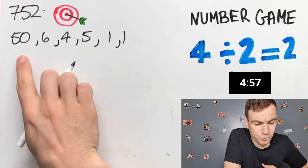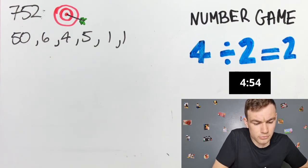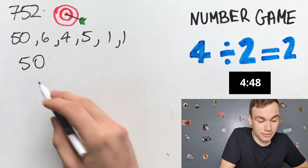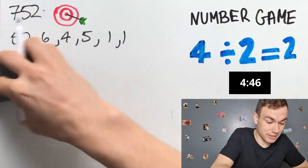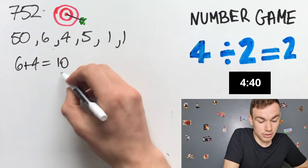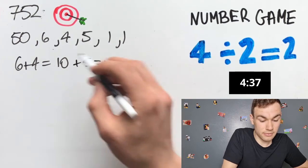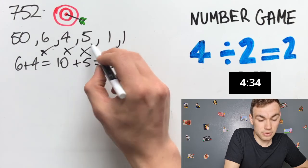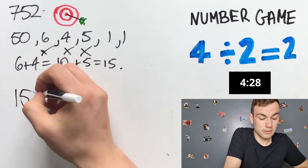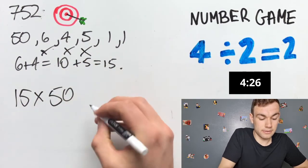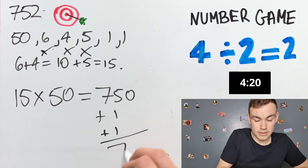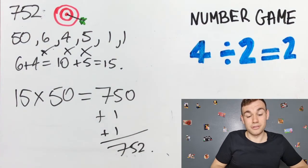6 plus 4 is equal to 10 plus 5 is equal to 15. We've used 6, we've used 4, we have used 5 and we get back 15. 15 multiplied by 50 is equal to 750 plus 1 plus 1, 752.